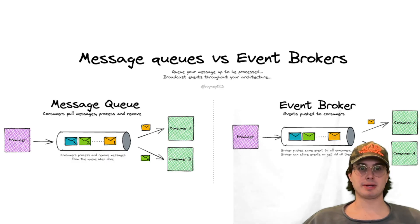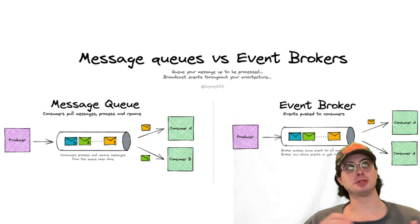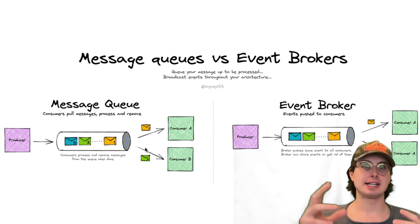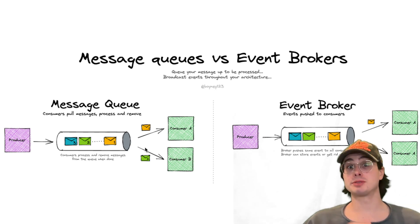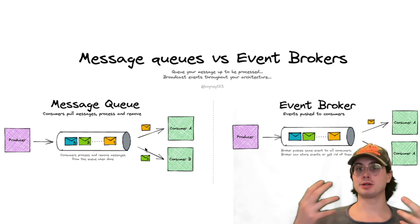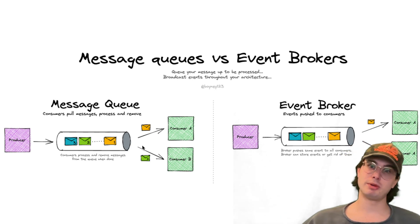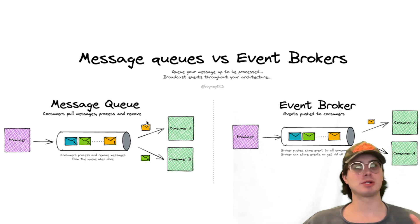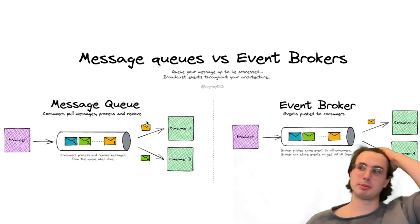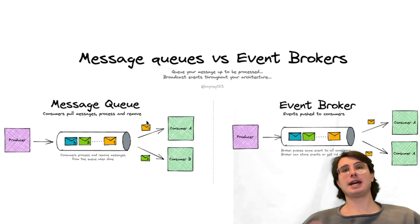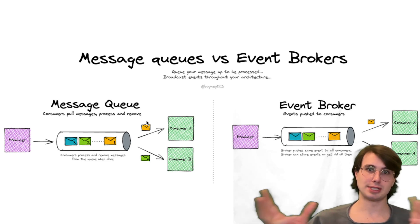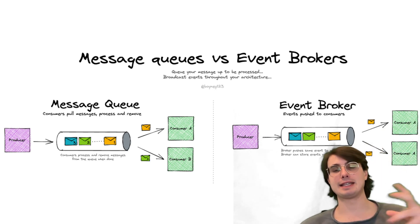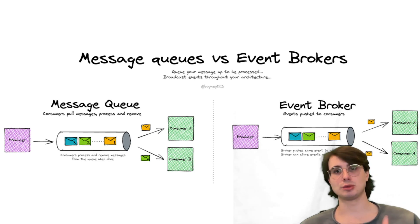Next, use message queues to decouple producers and consumers. Instead of having components tightly and directly linked together, introduce a buffer — something like a Kafka topic, a Pulsar topic, or a Redis stream — that can absorb traffic spikes and prevent overwhelming consumers. Think of it almost as a load balancer between your producers and consumers. Partition those queues strategically with access patterns to allow parallelism, so multiple queues can monitor a set of sources and route traffic accordingly to backend consumers.